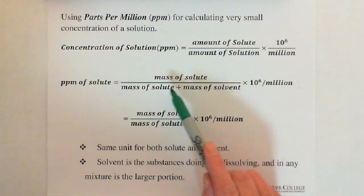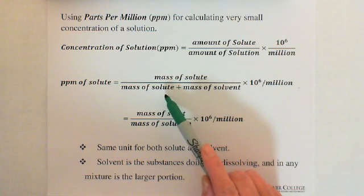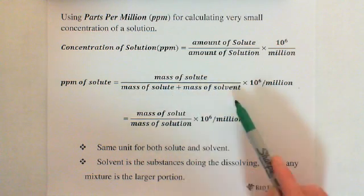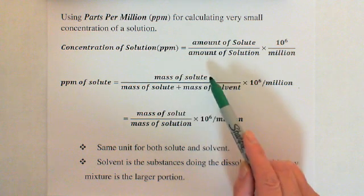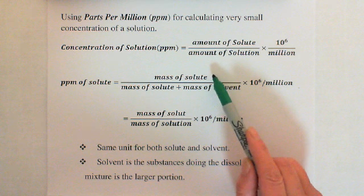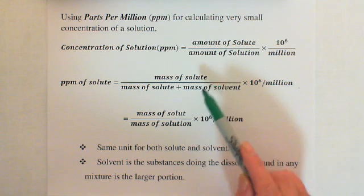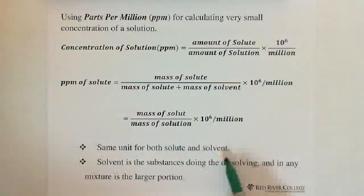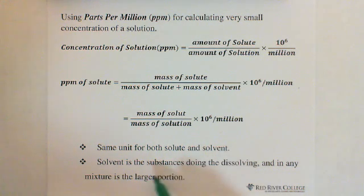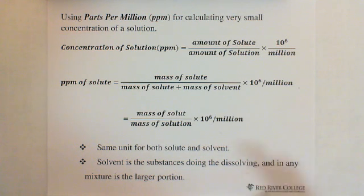When given both solute and solvent in mass, we can use any unit as long as the mass of solute has the same unit as the mass of solvent — the same unit for both solute and solvent. Also, the solvent is the substance doing the dissolving and in any mixture is the larger portion.